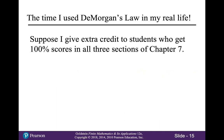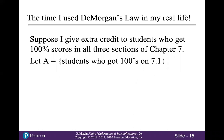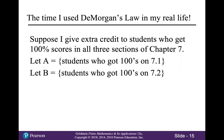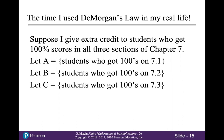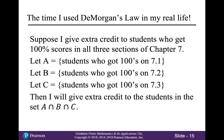I get to tell you about the time I used DeMorgan's law in my real life. Suppose I give extra credit to students who get 100% scores in all three sections of Chapter 7. Let set A be the students who got hundreds on Section 7.1 homework, B be the students who got hundreds on 7.2 homework, and C be the students who got hundreds on 7.3 homework. The set containing the students who get the extra credit would be the intersection of sets A, B, and C.